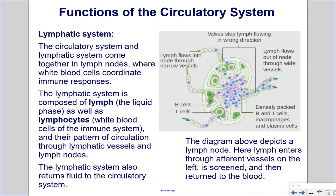Lymphatic System: The circulatory system and lymphatic system come together in lymph nodes, where white blood cells coordinate immune responses. The lymphatic system is composed of lymph (the liquid phase), lymphocytes (white blood cells of the immune system), and their pattern of circulation through lymphatic vessels and lymph nodes. The lymphatic system also returns fluid to the circulatory system.